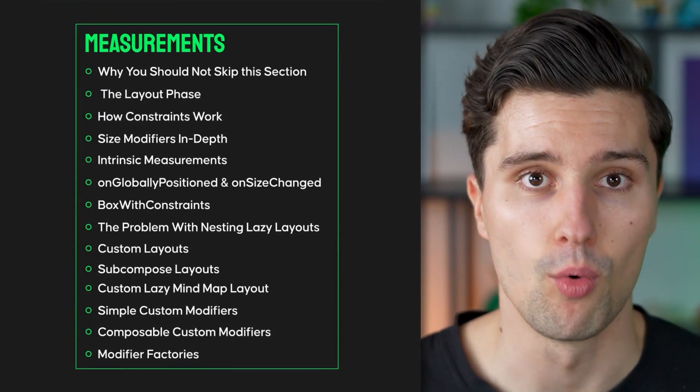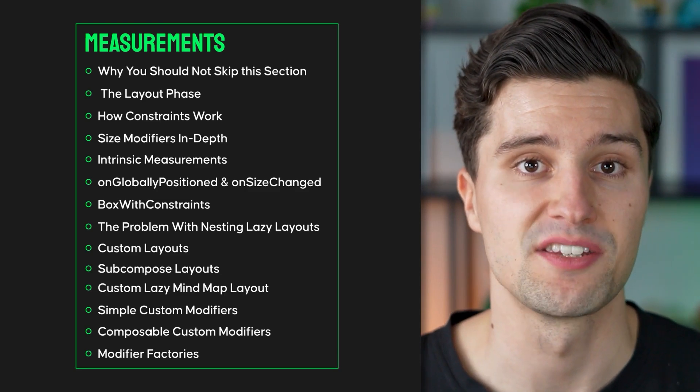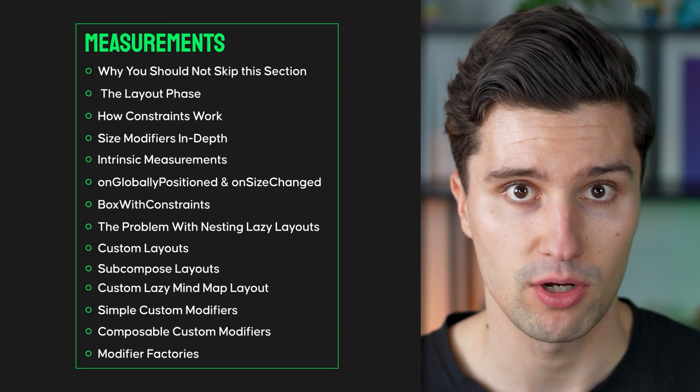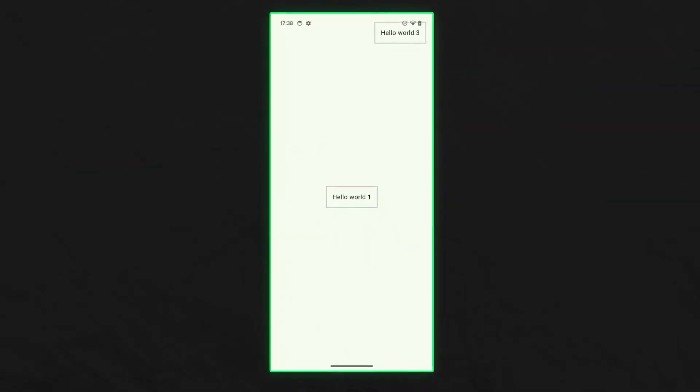From section four, things become more advanced — measurements, advanced layouts, and advanced modifiers. You will learn in detail about the layout phase in Jetpack Compose, how constraints are propagated from modifier to modifier to composables, and how UI components use them to determine their actual size on screen. You'll learn about intrinsic measurements, subcomposition, creating custom layouts from scratch, custom subcompose layouts, and even custom lazy layouts — including a custom lazy mind map layout where any composable can be placed with lazy loading, so only visible items are rendered, just like lazy column behavior. You'll also learn about custom modifiers, composable modifiers, and modifier factories.